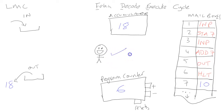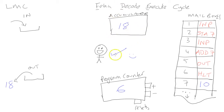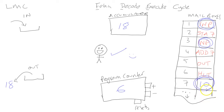He walks over to position six, which says HALT. He executes that command, which basically says the job is done — he can stop. That is the basic principle of how a computer works. The in tray is like your input devices such as a keyboard, mouse, or sensor. The out tray is like your output devices — monitors or speakers. The accumulator is like the CPU doing calculations, and the mailboxes are like your RAM storing both instructions and data.